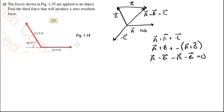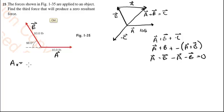Now let's do an analytic solution. The easiest way to do this is by components. Looking at vector A, the X component of A is 10 pounds and the Y component of A is zero pounds.